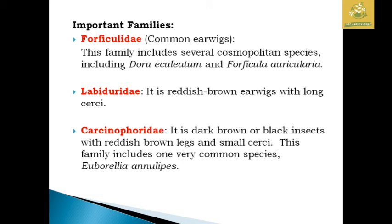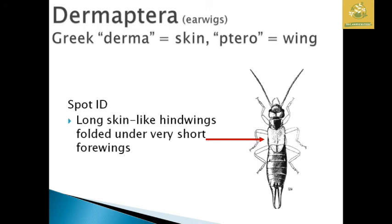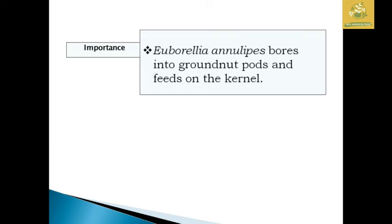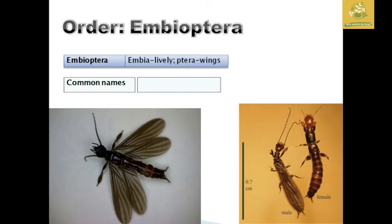Important families of Dermaptera include Forficulidae (common earwigs), which includes species such as Doru aculeatum and Forficula auricularia; Labiduridae (reddish-brown earwigs with long cerci); and Carcinophoridae, which are dark brown or black insects with reddish-brown legs and small cerci — including the common species Euborellia annulipes. Earwigs bore into grain and feed on kernels, which is an important economic characteristic of this group.